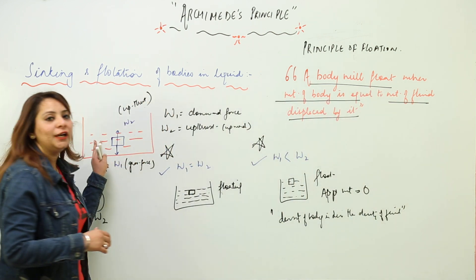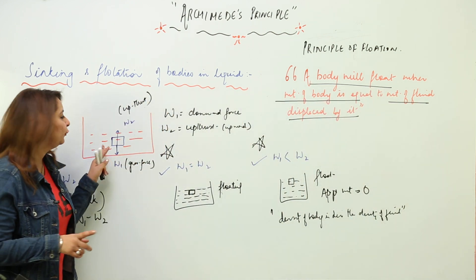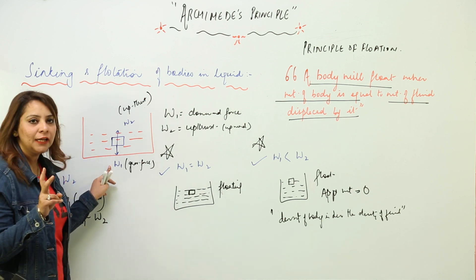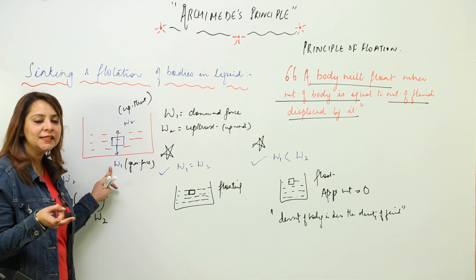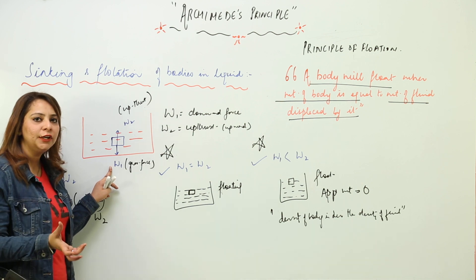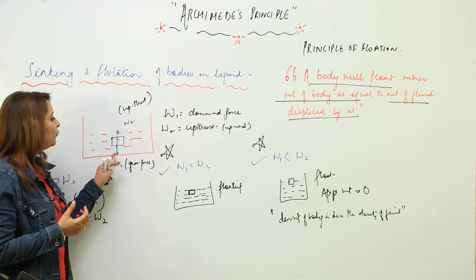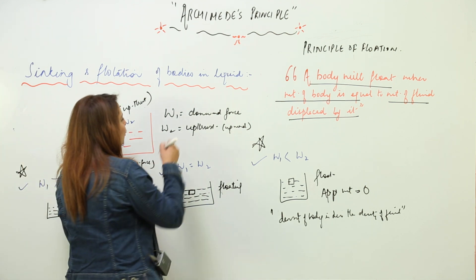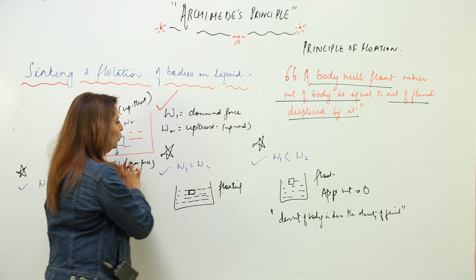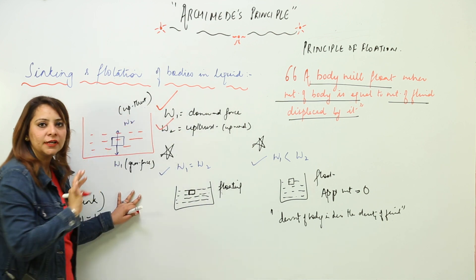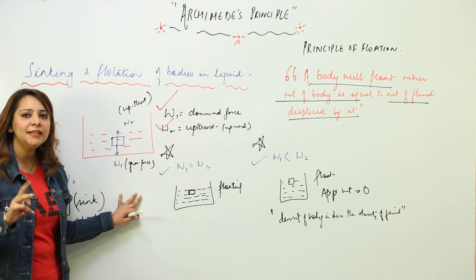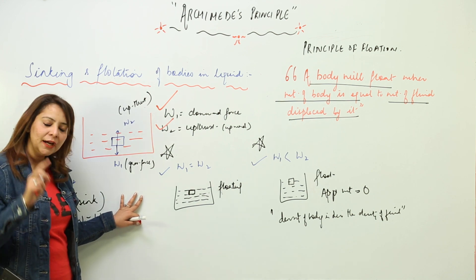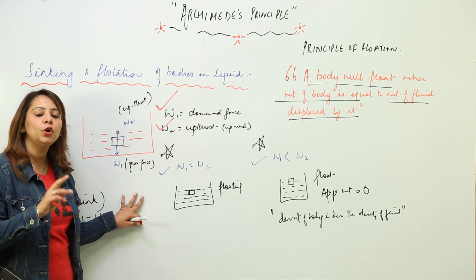Whenever any body is immersed in a fluid, two kinds of forces act on it. One is acting downward — that is due to gravitational force attracting the body downward — and the other force is the up thrust which we have already studied. So there are two forces: W1 acting downward and W2 which is the up thrust. These two forces are opposite but not always equal.